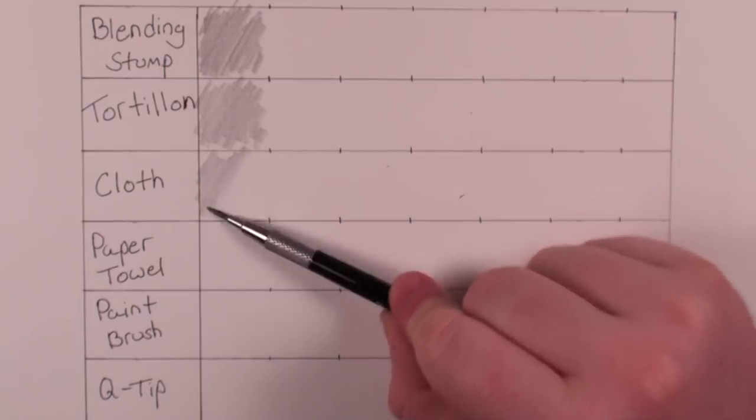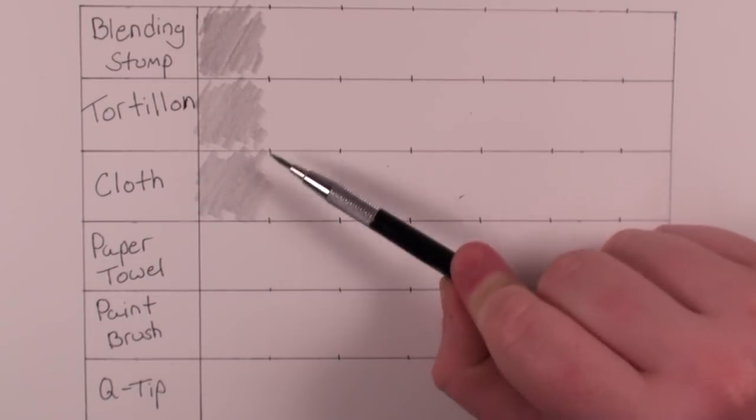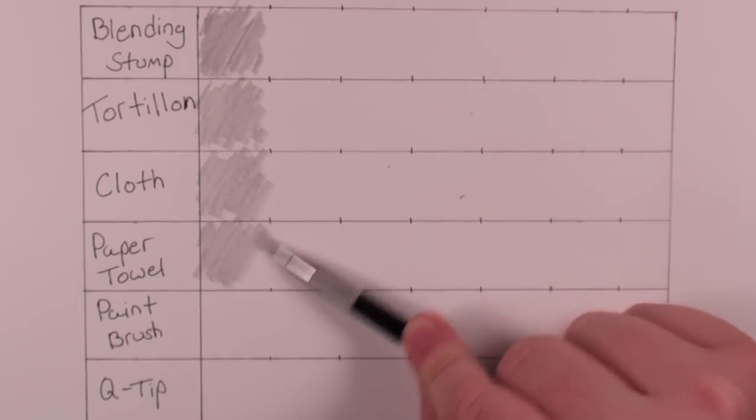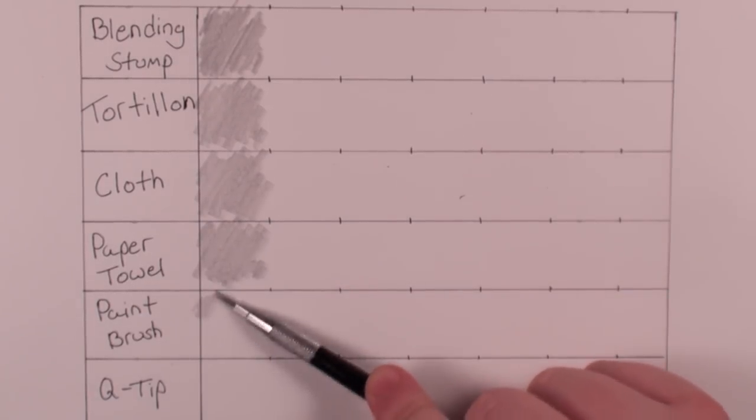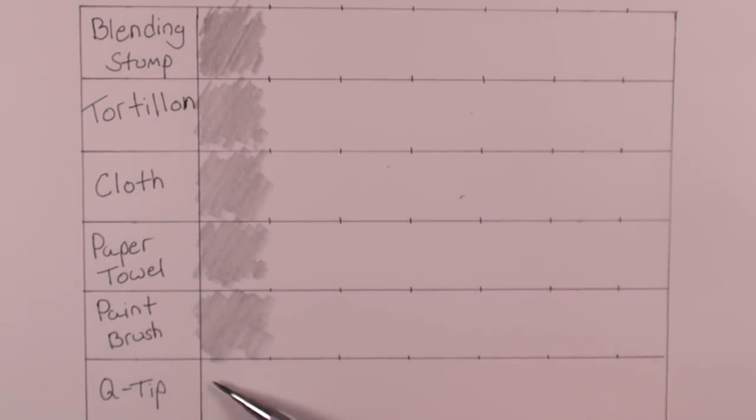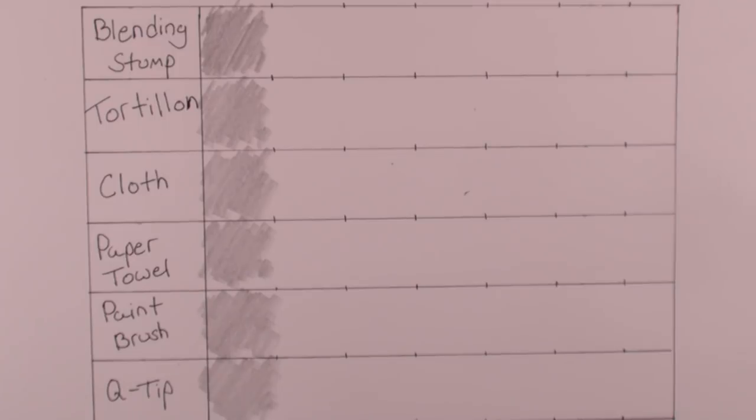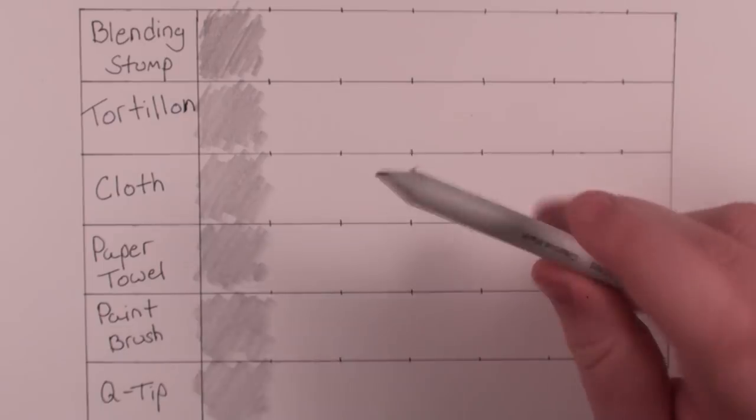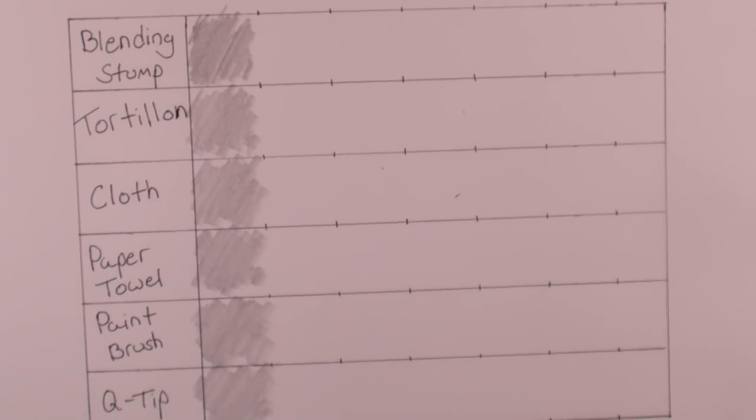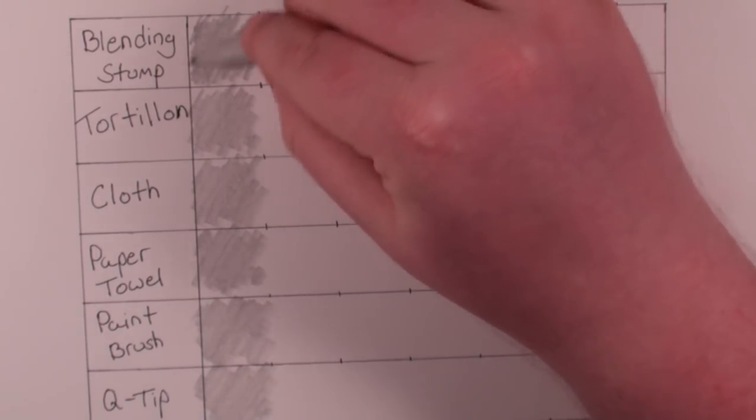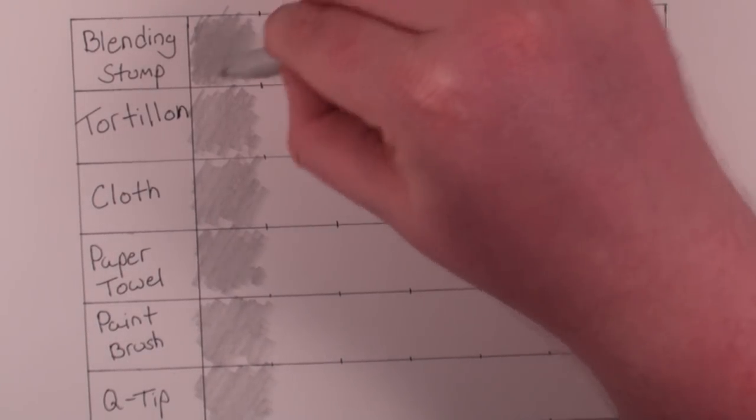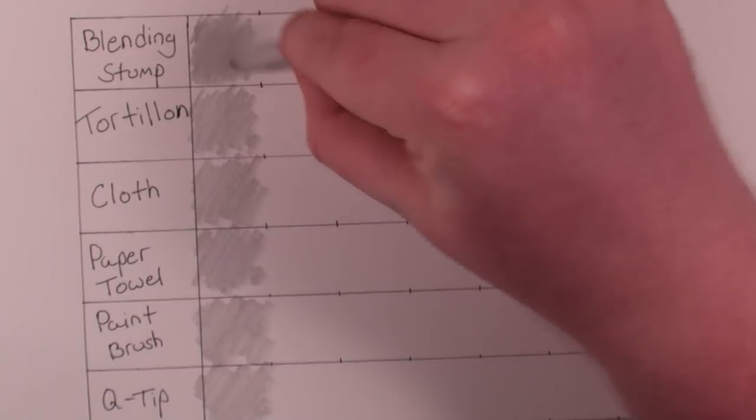All right, so let's start off with probably the most common way of blending which is a blending stump. So to start off I'll just kind of go in a circular motion, just try and get some of that on here and then I'll work it out, start working that in.